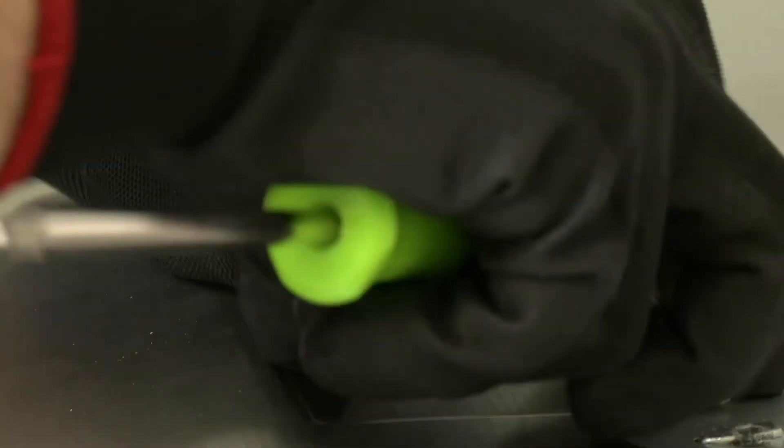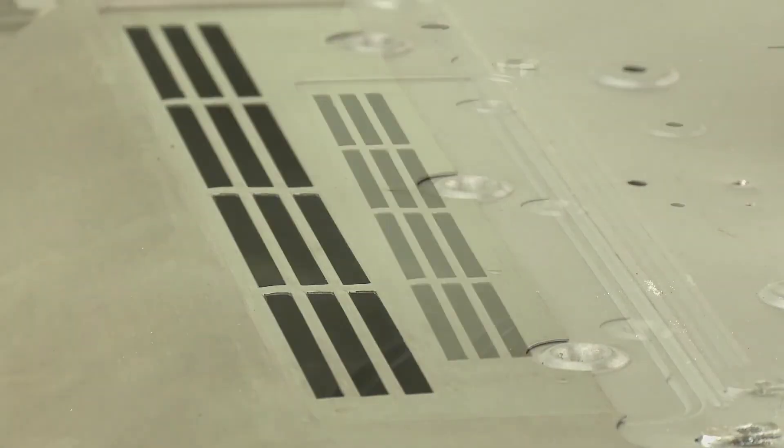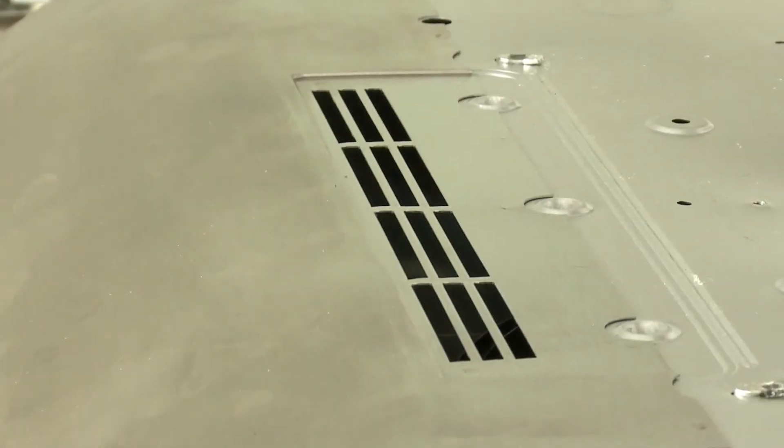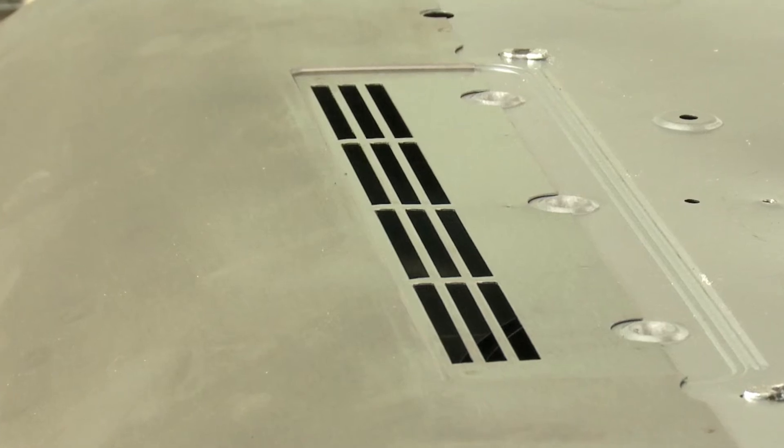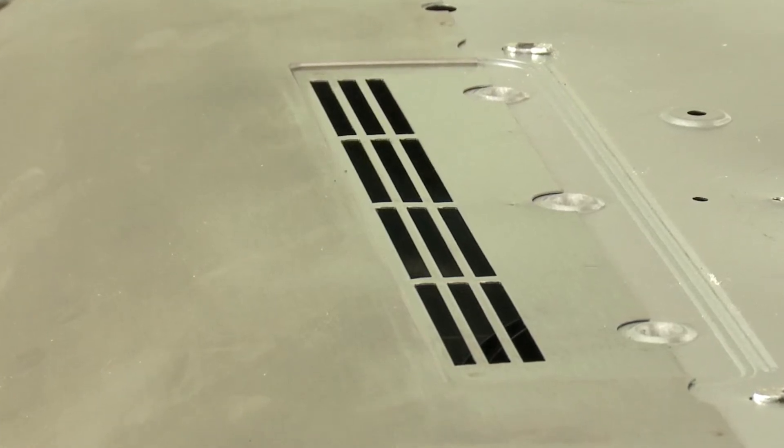For ductless installation, remove the 3 screws holding the recirculation cover plate to the hood. Discard the plate and the screws. No other duct knockouts should be removed for ductless installation.